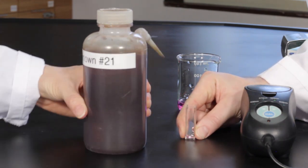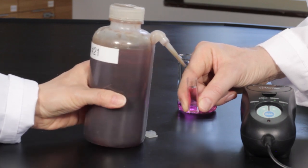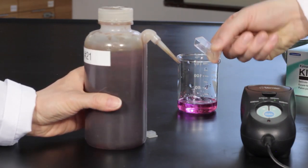Obtain an unknown solution of potassium permanganate. Rinse a cuvette with the unknown solution, then measure its absorbance and record it on your datasheet.